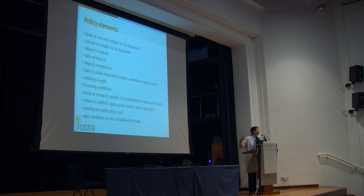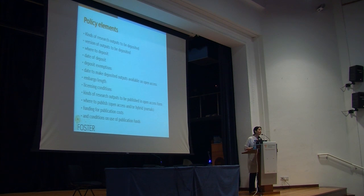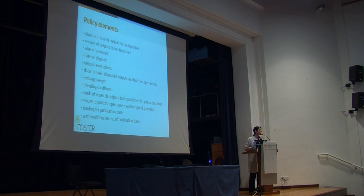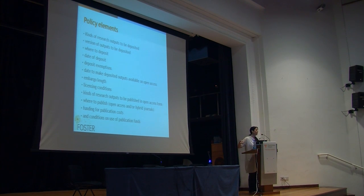This has to do with embargo length. If researchers have signed contracts with publishers that do not allow them to make content immediately openly accessible, this brings a problem. Institutions usually have a soft touch on this, which may be preferable. You want to have the materials in the repository, expose the metadata, and allow a little bit of time to researchers to make content openly available if they're unable to do so immediately or within one year. We all know that big publishers such as Elsevier or Springer tend to extend the embargo length, so policies tend to be friendly to researchers with that.